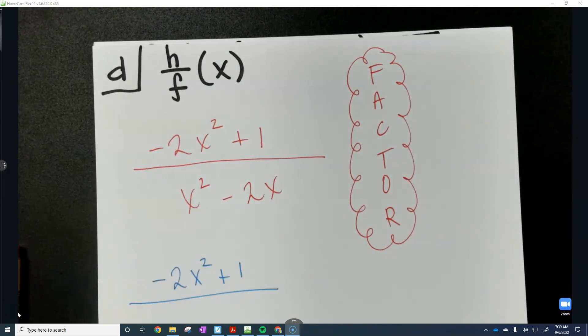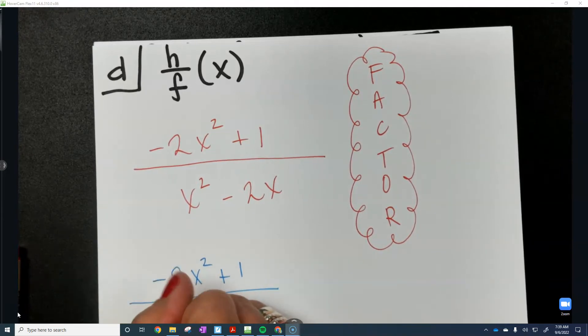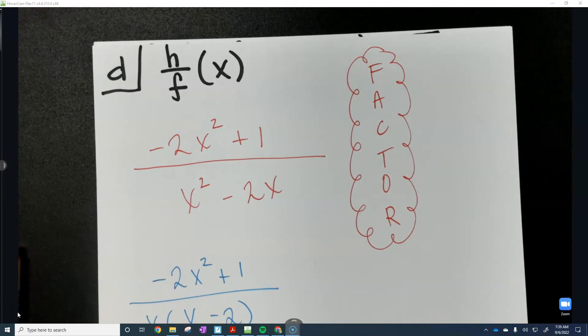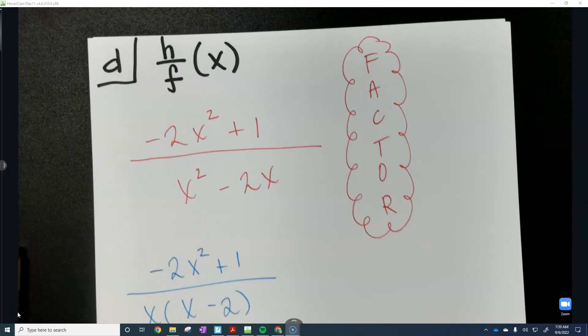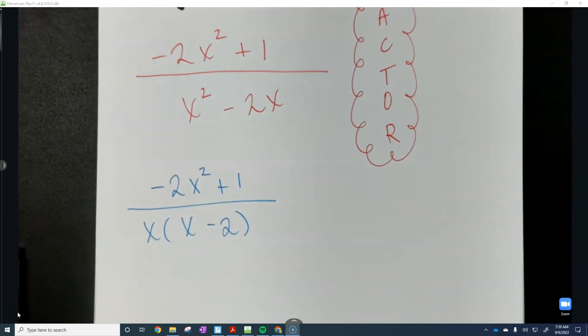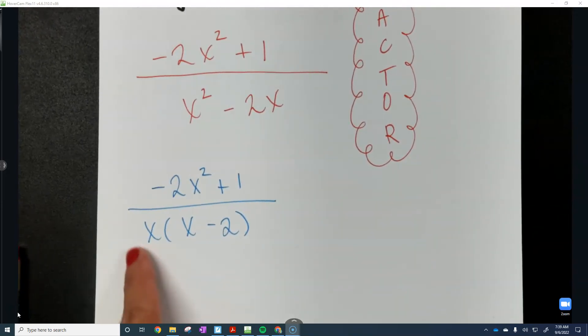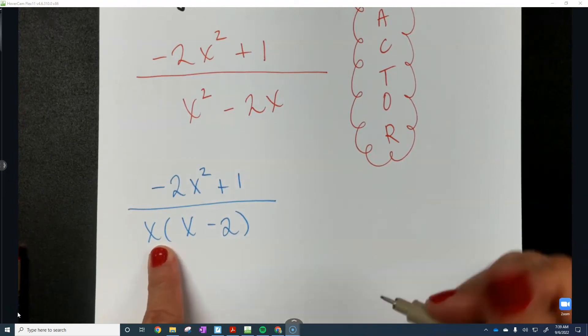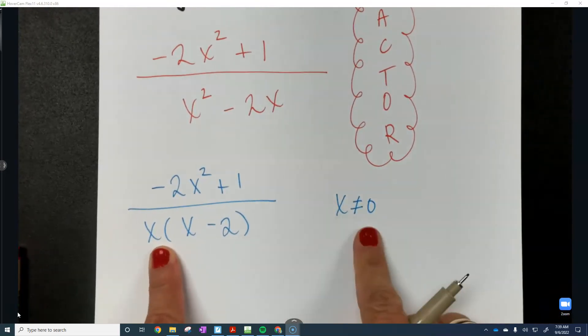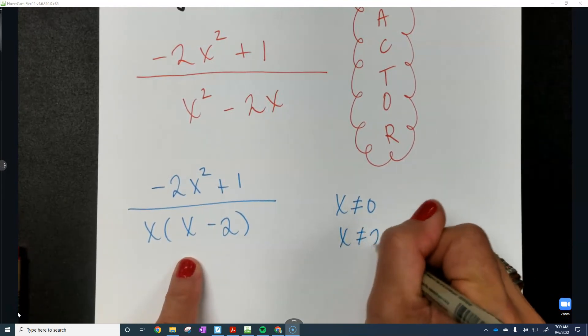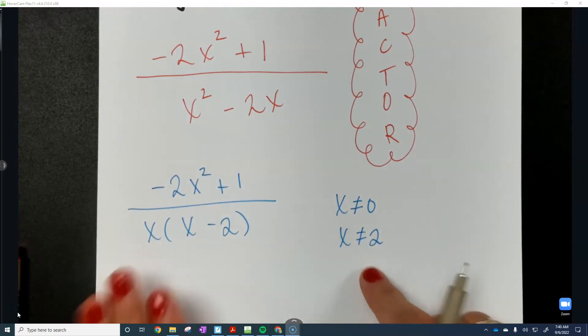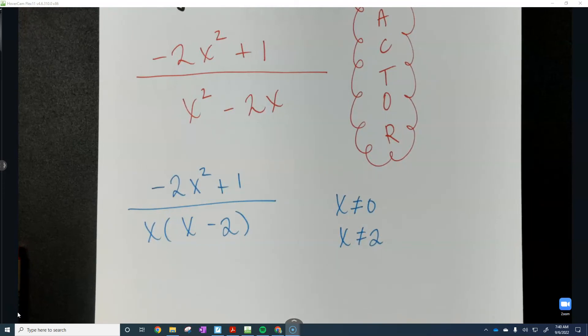However, on the bottom, we can take an x out. Sometimes things will simplify, but they are not going to simplify here. Also, we are going to have for the first time a restricted domain on your compositions. Remember, when you have a fraction, whenever you have x on the bottom, you've got some limits here. So we know x cannot equal 0 because that would make the whole thing 0. We also know x cannot equal a positive 2 because that would make the whole denominator 0. So remember, you must restrict domain when appropriate.